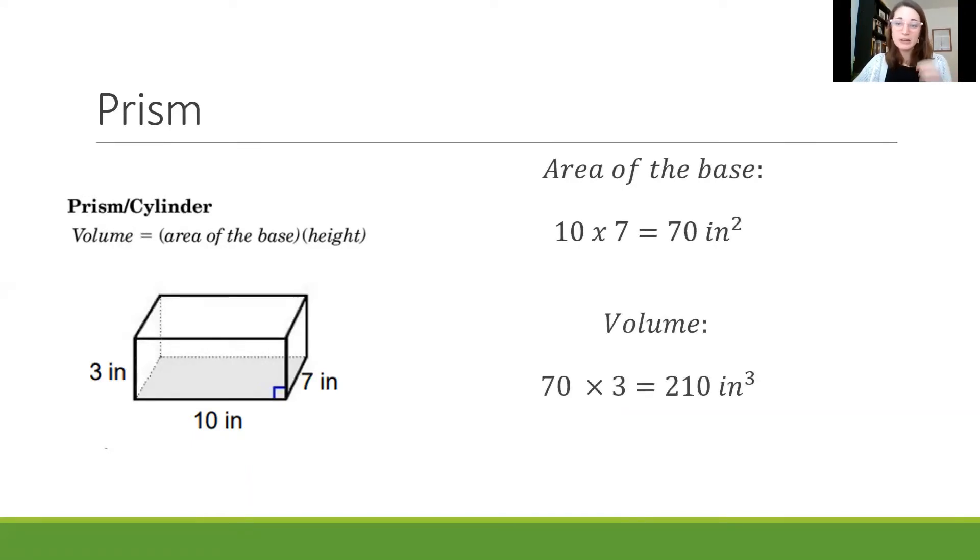Now to find the volume I just have to take that 70 and multiply it by our last remaining piece which is the height. And the height here as you can see on that left side is 3 inches. So when I multiply that together 70 times 3 means that I get a volume of 210 inches cubed.